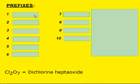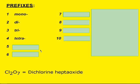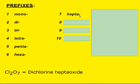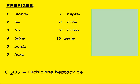The prefixes you need to know: one is mono, two is di, three is tri, four is tetra, five is penta, six is hexa, seven is hepta, eight is octa, nine is nona, and ten is deca. Some of these you may have heard before.